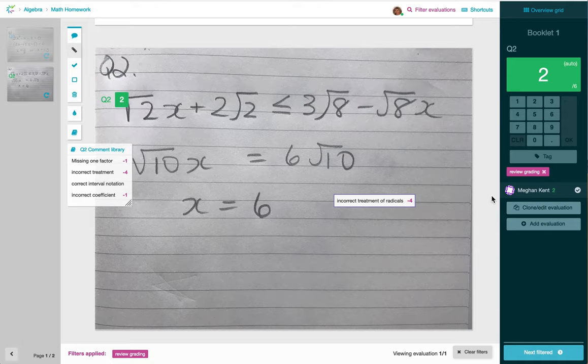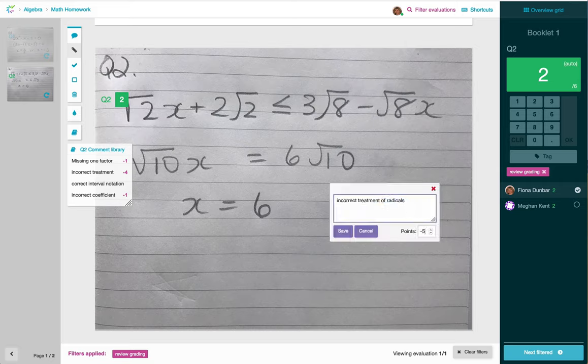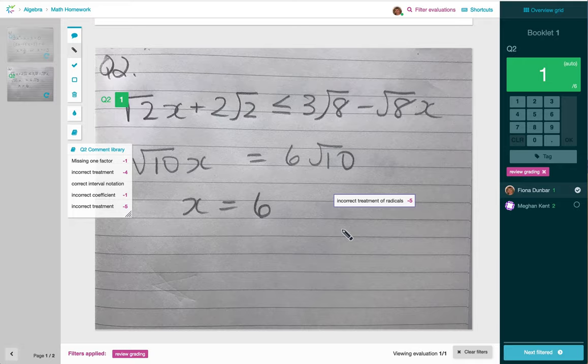I can make changes to their evaluation by cloning or editing, and deciding to give this a different points deduction, and save that change.